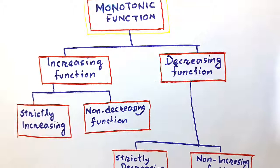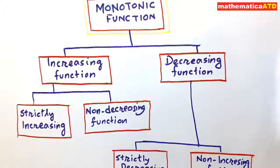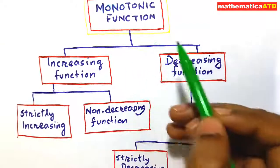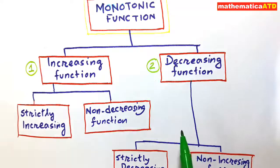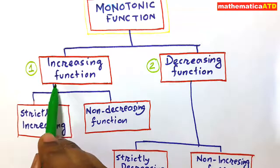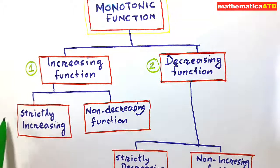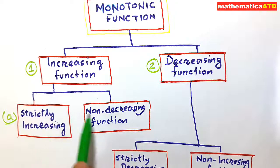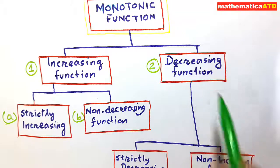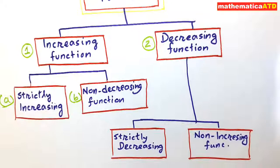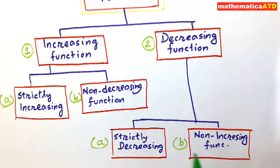Our topic is monotonic function. From the word monotonic, we indicate the monotonous behavior — that is, in the sense of ascending or descending. Monotonic function is divided into two parts: the first is increasing function and the second is decreasing function. The increasing function is further divided into strictly increasing function and non-decreasing function. The decreasing function is divided into strictly decreasing function and non-increasing function.